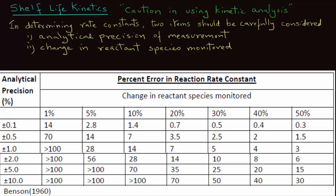Note that if the analytical precision is plus minus 0.1, that means you have very good precision. And if you followed the change in reactant species up to 20%, then you will have a percent error of 0.7 in the calculation of reaction rate constant.